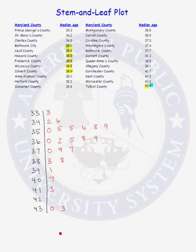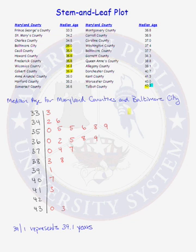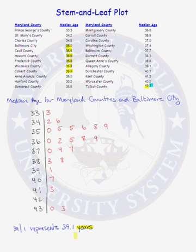All of our data values have been plotted. Now we need to add the two things that must be included with every stem and leaf plot: a title describing what is being graphed, and a key so the reader knows what the stem and leaf represent. Our title is 'Median Age for Maryland Counties and Baltimore City.' Our key is 39 | 1, which represents 39.1 years — the numbers to the left of the vertical bar represent whole number of years, and the digit to the right represents the decimal number of years.